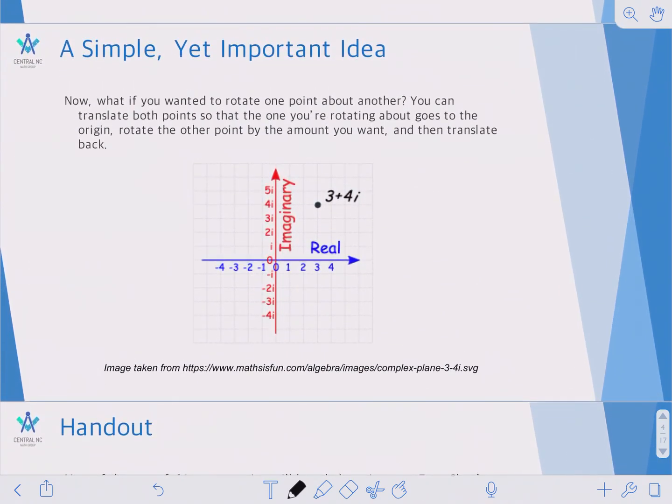Now let's say you want to rotate one point about another point, which is not necessarily the origin. For example, let's say we take 3 plus 4i, and we want to rotate it 90 degrees about minus 2 plus 2i.